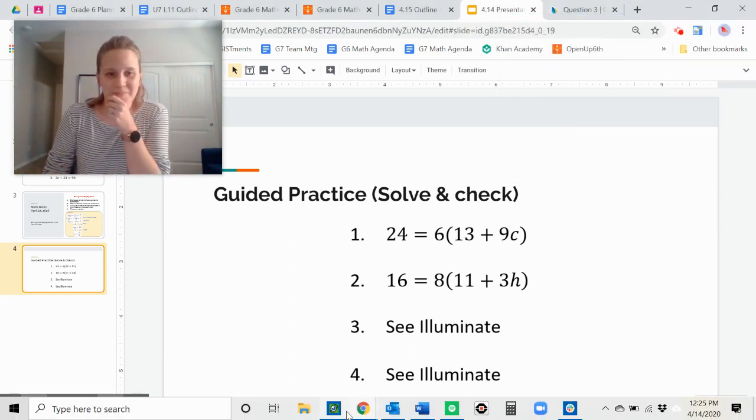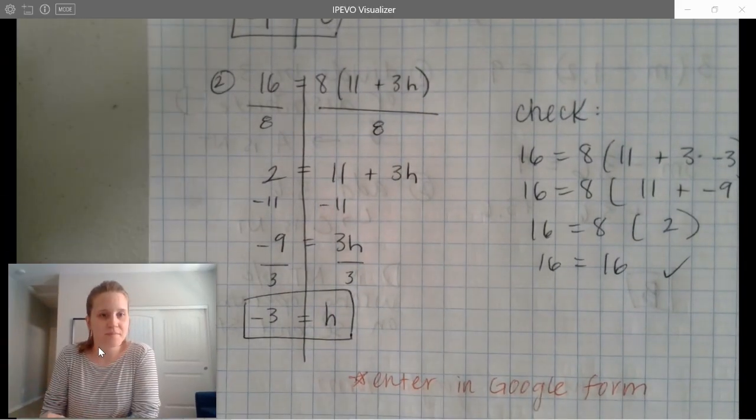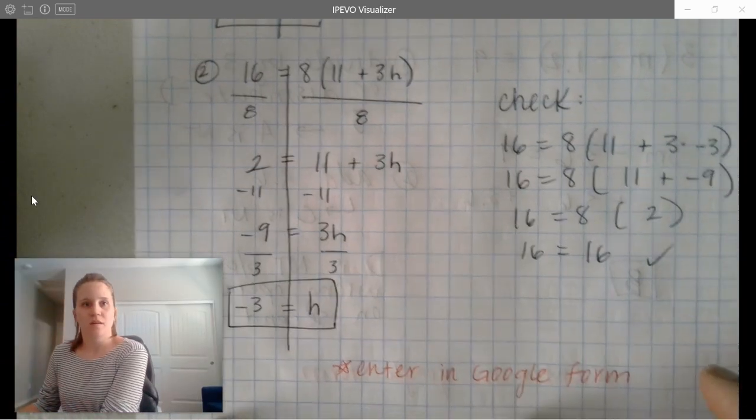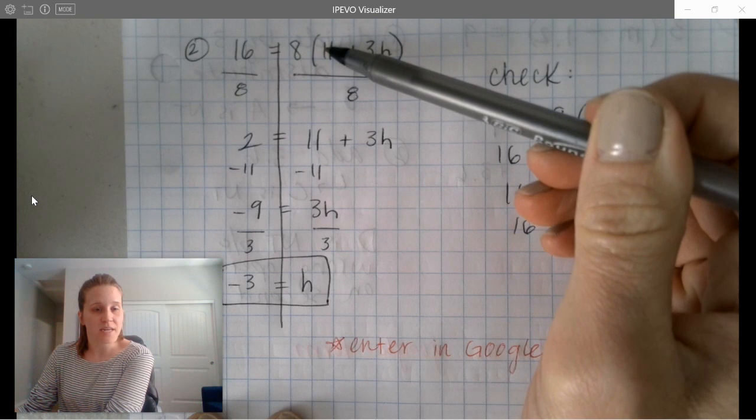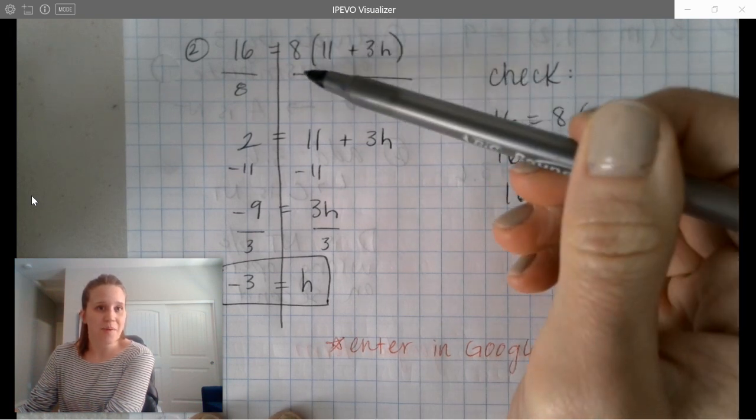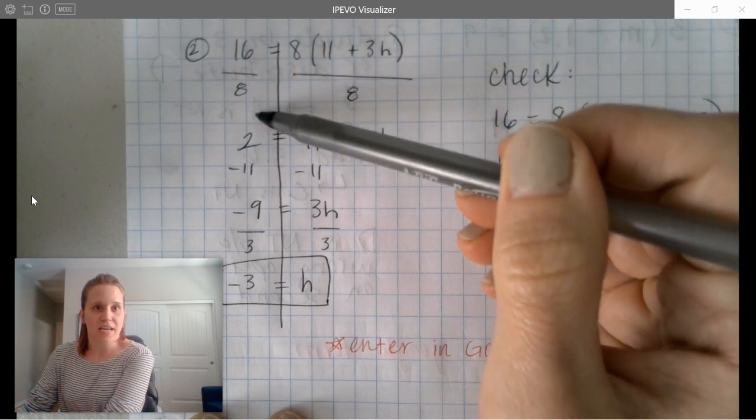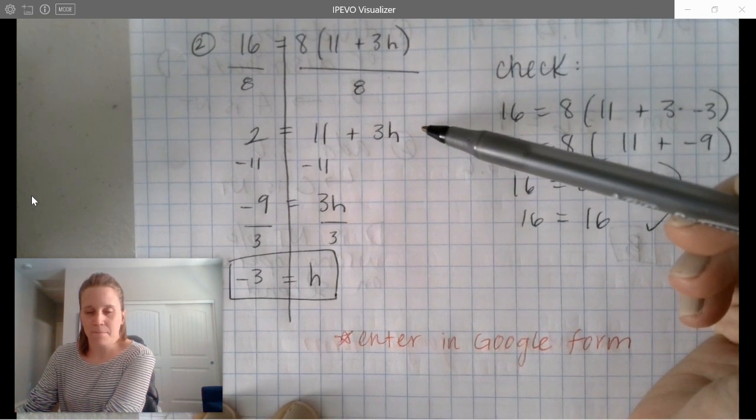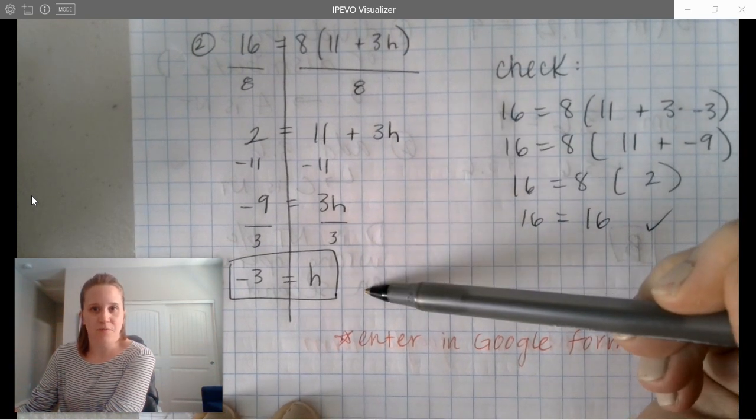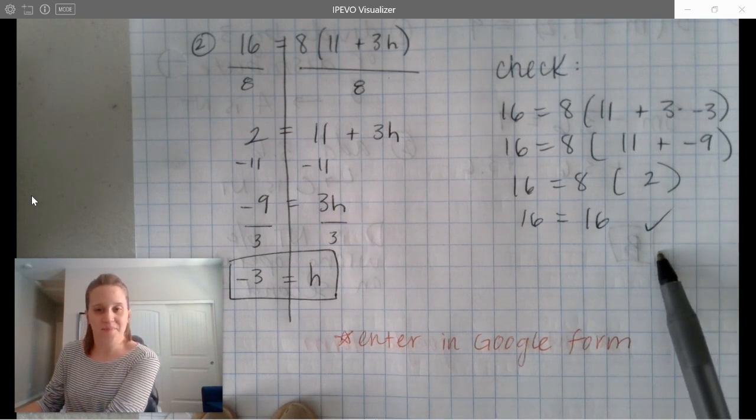Halfway through our time. Think about is 8 a factor of 16. That's going to help you decide if dividing is a good choice or if you should distribute. All right. Let's review. Here is my work for question 2. I decided to divide by 8. Again, you could have distributed 8 times 11 and 8 times 3h. But because 8 is a factor of 16, I thought I could get rid of it really easily and not have larger numbers here to work with. My answer is negative 3 equals h. Here's what a good check step looks like.